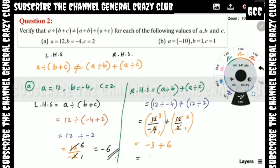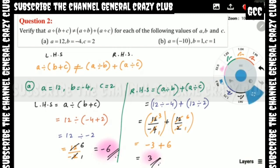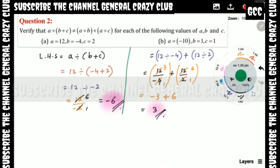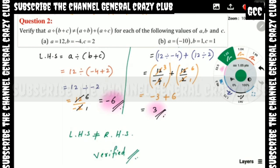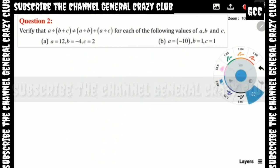So minus 3 plus 6 equals 3. The left-hand side gave minus 6 and the right-hand side gave 3 — both values are not equal. Therefore left-hand side is not equal to right-hand side. Verified! Very easy solution. Now let's look at part B.